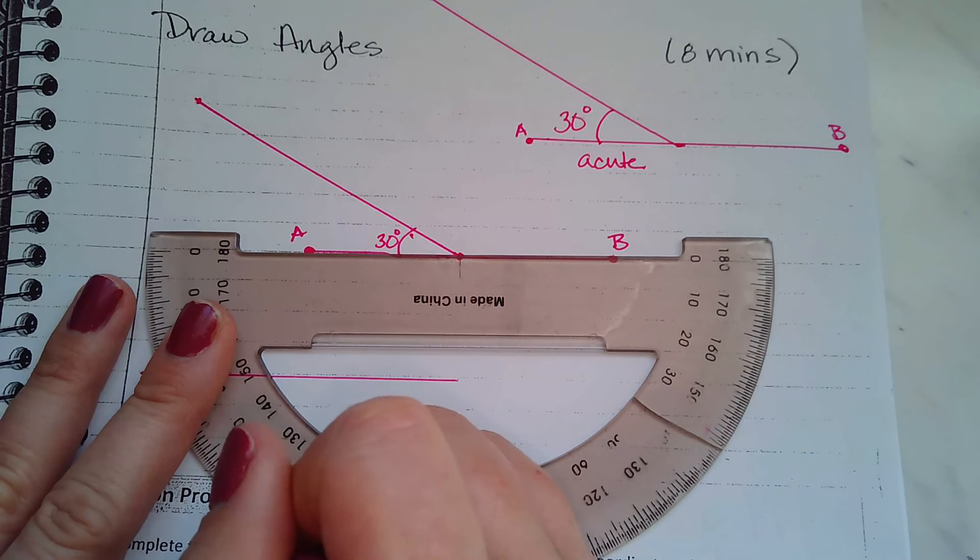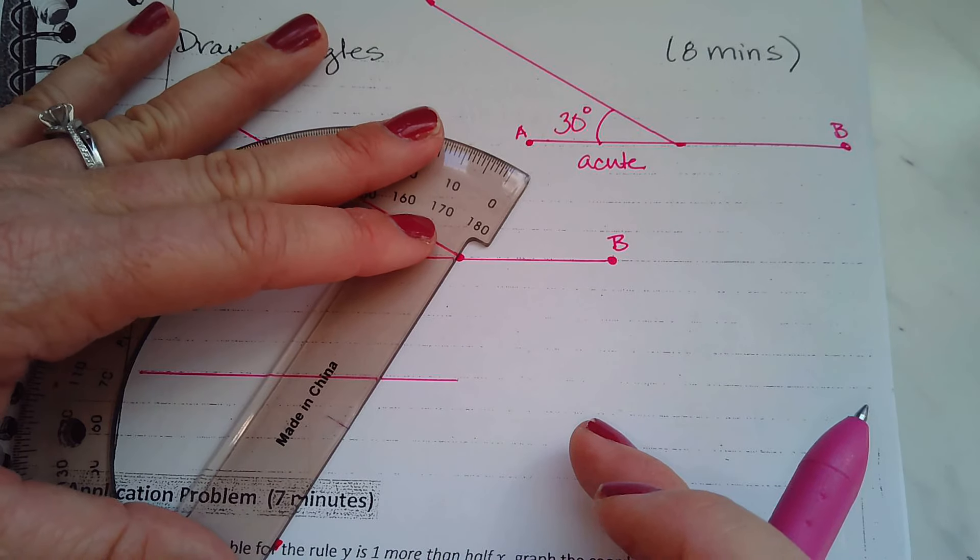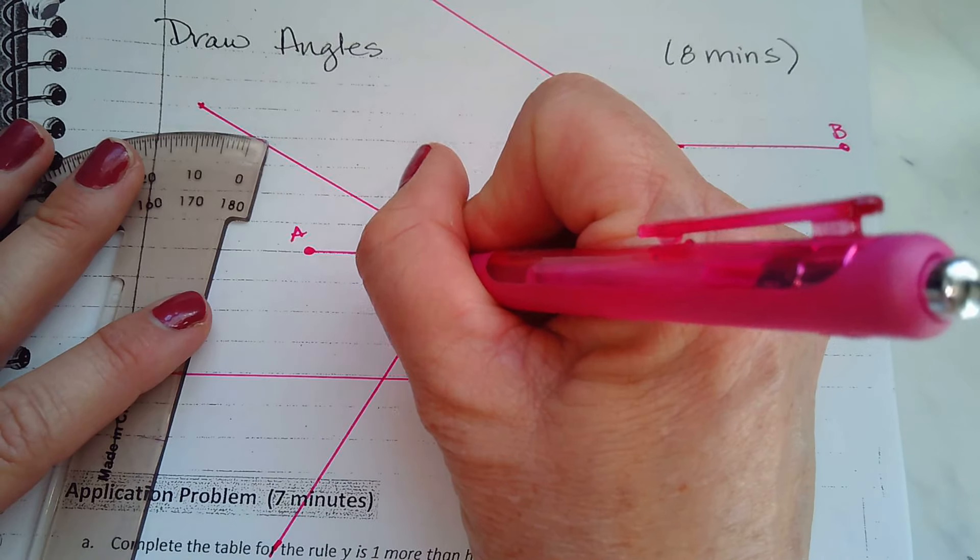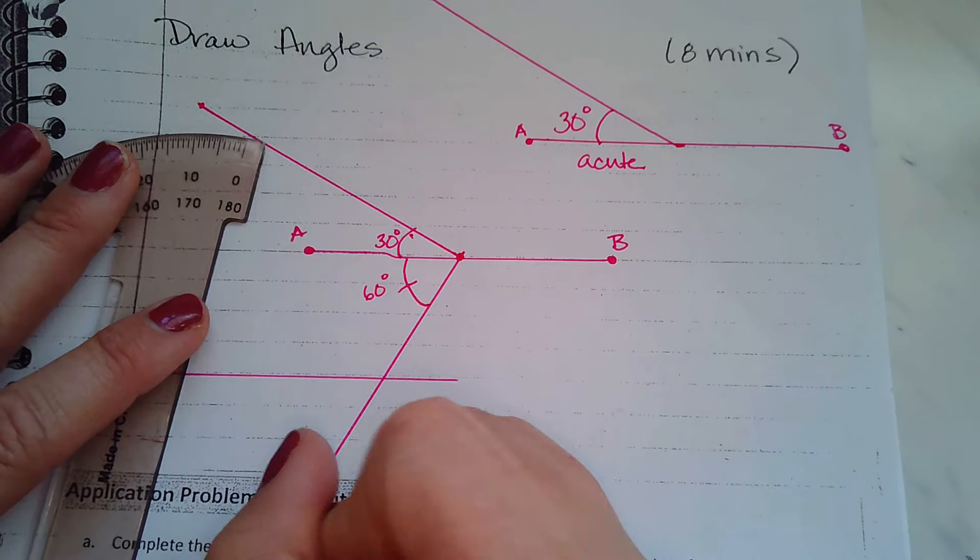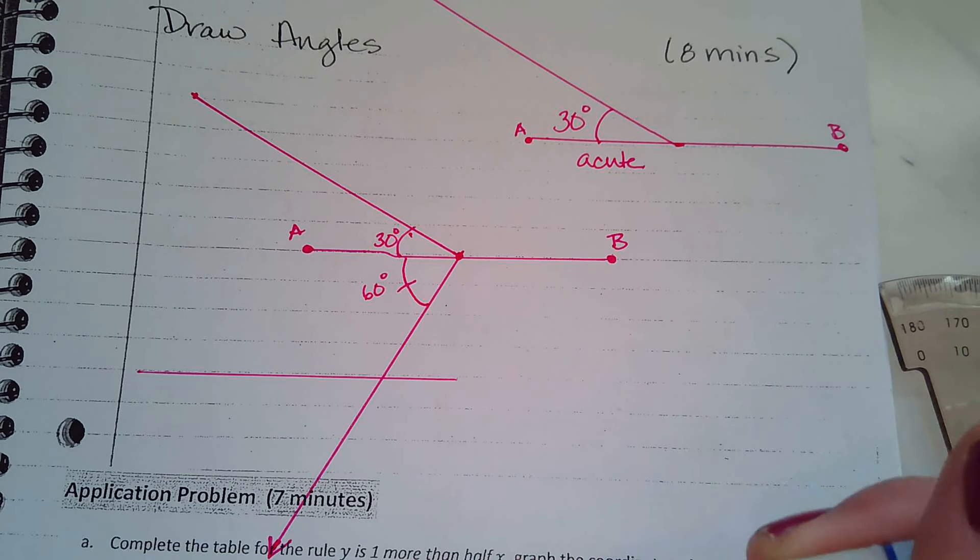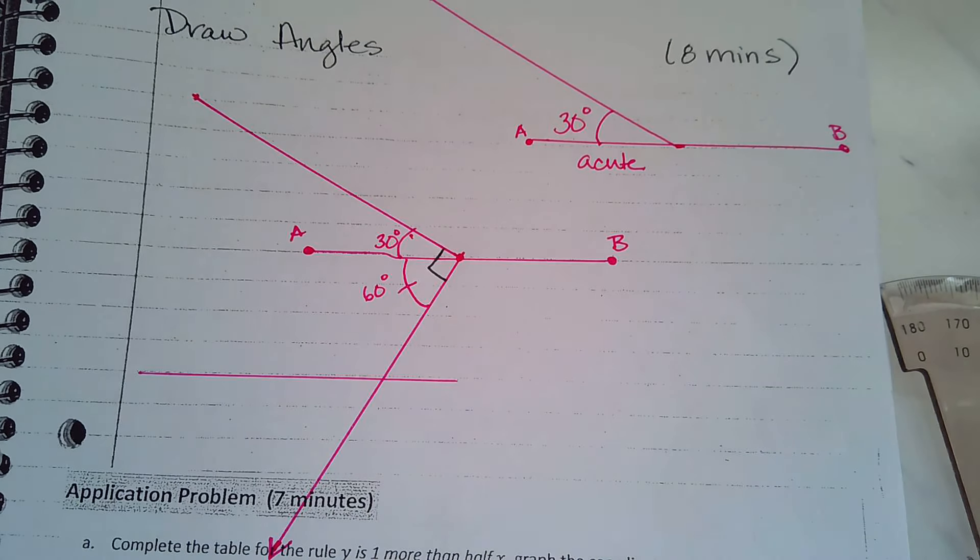A perpendicular line measures 90 degrees. So if I have 30 here, what does my angle have to be here, down below? You're right. It has to be 60 degrees. So now I'm going to draw another angle and I'm going to measure this 60 degrees. So what did we just create? We created perpendicular lines.